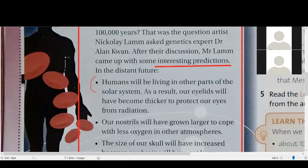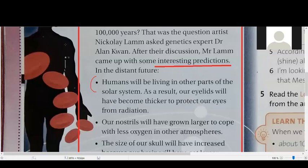Humans will be living in other parts of the solar system. As a result, our eyelids will become thicker to protect our eyes from radiation. Yes, correct. Okay, but look, we don't say eyelids. We say eyelids.